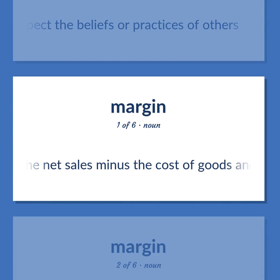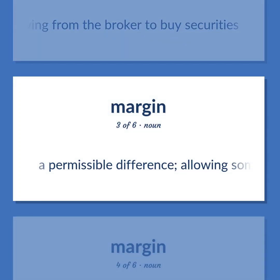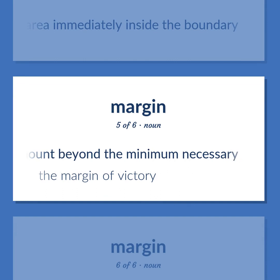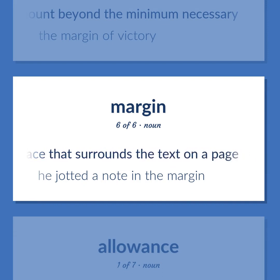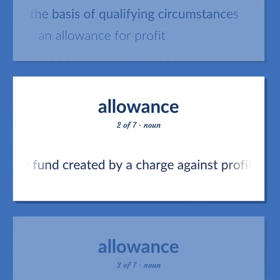Finance: the net sales minus the cost of goods and services sold. The amount of collateral a customer deposits with a broker when borrowing from the broker to buy securities. A permissible difference, allowing some freedom to move within limits. The boundary line or the area immediately inside the boundary. An amount beyond the minimum necessary — the margin of victory. The blank space that surrounds the text on a page — he jotted a note in the margin. An amount added or deducted on the basis of qualifying circumstances — an allowance for profit. A reserve fund created by a charge against profits in order to provide for changes in the value of a company's assets.